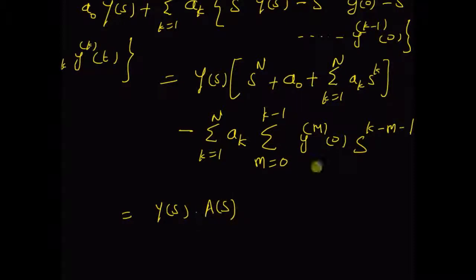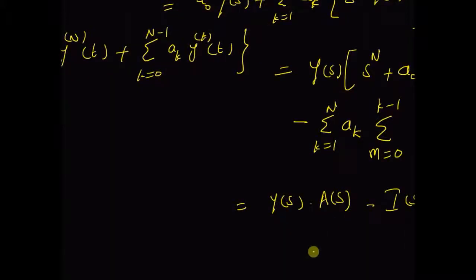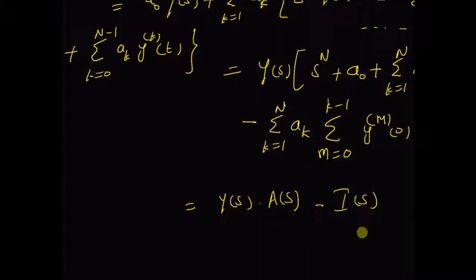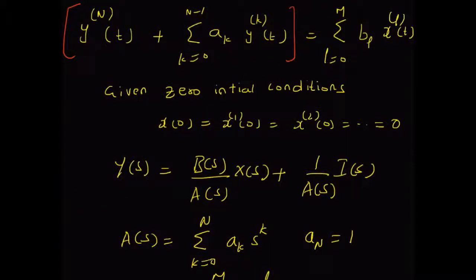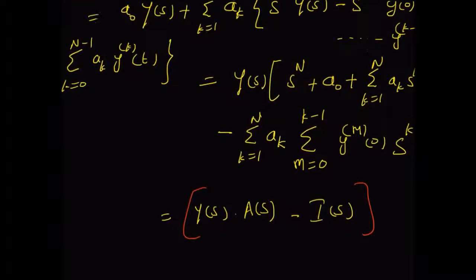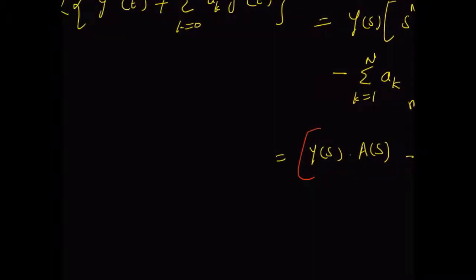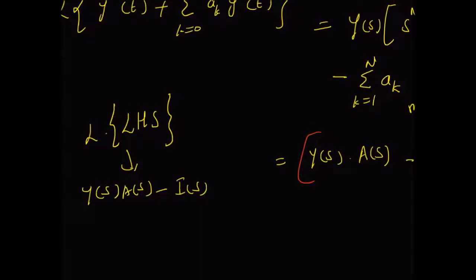So this is Y(s) multiplied by A(s). And the second term is clearly equal to I(s), that is the polynomial I(s) defined here. So this is the Laplace transform of the first two terms on the left-hand side — that is the Laplace transform of the left-hand side of the ordinary differential equation — which is clearly equal to Y(s) multiplied by A(s) minus I(s).